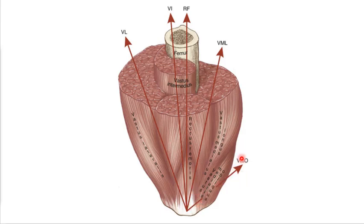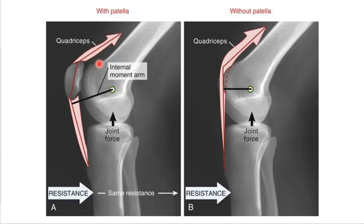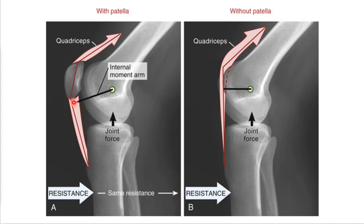There's a division in the vastus medialis called the oblique fibers because they run more obliquely at an angle. They have a better moment for pulling the patella medially and counter the IT band's pull on the patella. The patella gives the body more mechanical advantage — without it, the quadriceps would have to generate much more tension to achieve the same movement. That pulley and moment arm decreases the force the quadriceps need to generate.